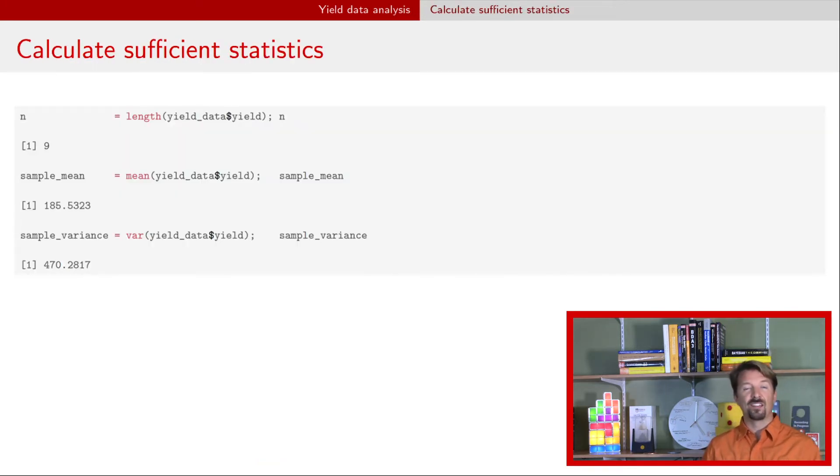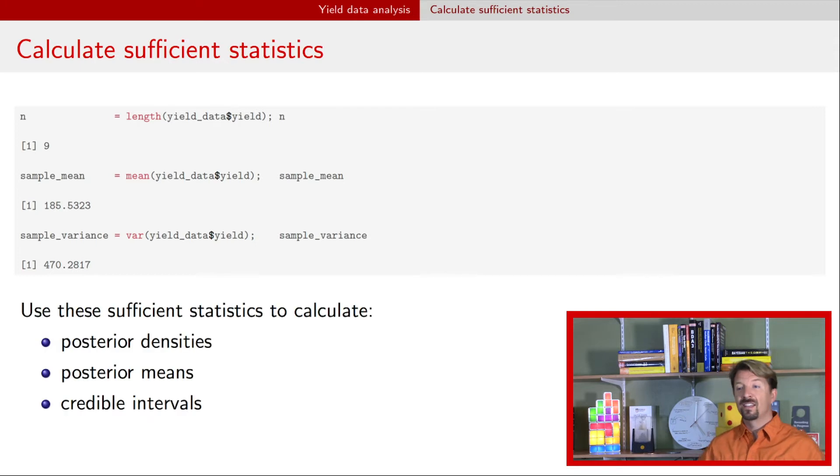All right, so we can calculate, as we pointed out in the previous video, there are three quantities that we need to know to get all of the posterior distributions for the normal model. We need to know the sample mean, we need to know the sample variance, and we need to know the sample size. So we can calculate those three statistics in R, and we can use those statistics to calculate things like posterior densities, posterior means, and credible intervals. Now, these terms are called sufficient statistics. That's why I've titled the slide that, which is a much bigger and more in-depth topic that you might be interested in, but I'm not going to go into detail here. Just know that these are sufficient to produce all of the things that we want on the bottom.